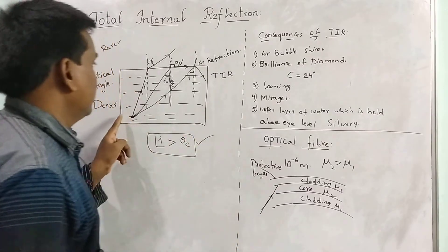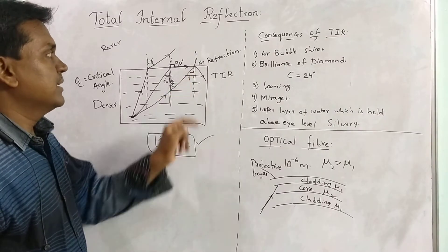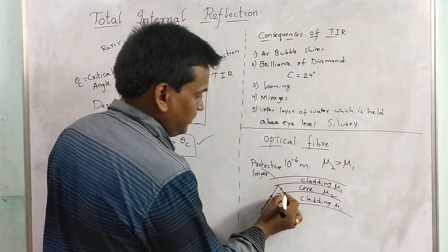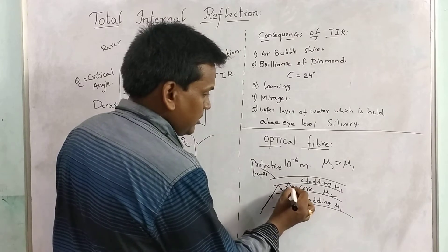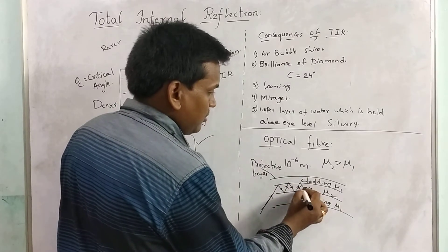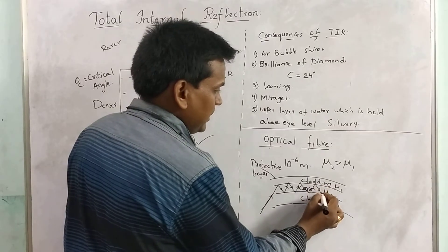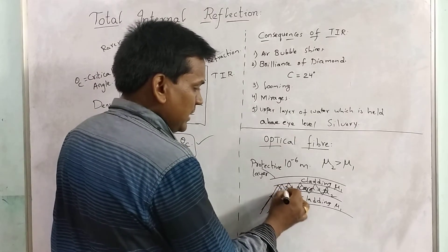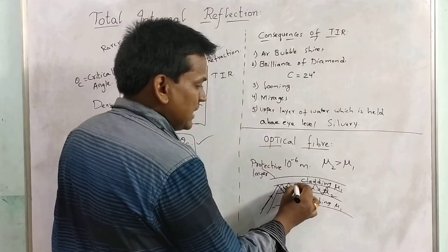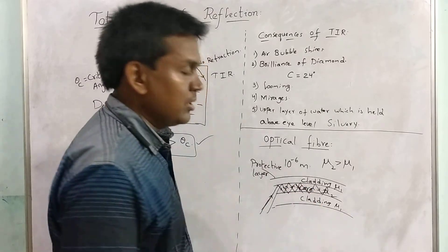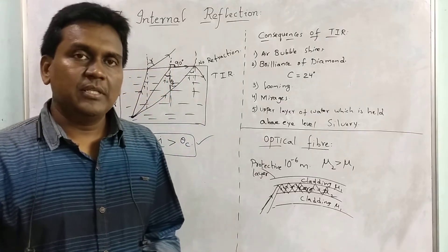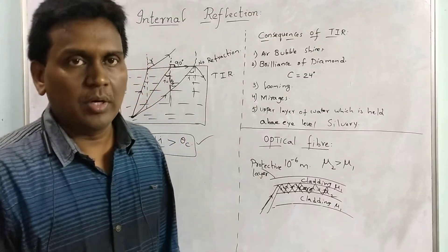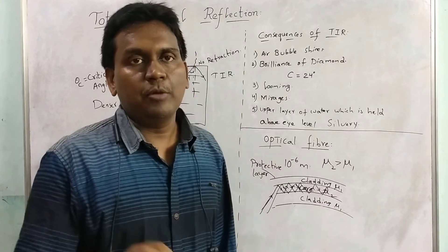A ray incident through the core at an angle greater than the critical angle undergoes total internal reflection. The ray bounces back and keeps moving from one place to another along the fiber in this way. Multiple waves can be sent simultaneously and no wave will interfere with another wave. The waves travel through the core and total internal reflection takes place continuously inside the optical fiber.